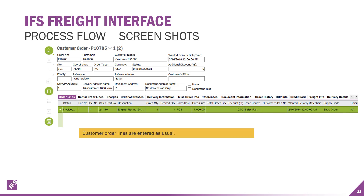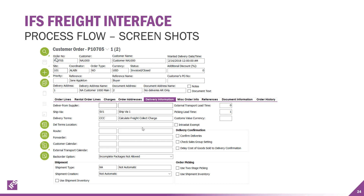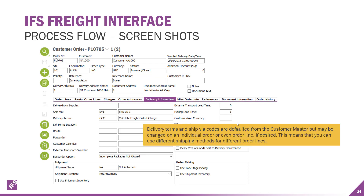Once you get into the process flow, you enter a customer order just as you normally would — enter a customer order line, put in your part, quantity, get your pricing set, save it, and start to process it. Your delivery terms and ship via codes are defaulted from the customer master, but you can change that at the order level or even at the line level. If you have 10 different order lines and they each ship different ways, you can do that as well.